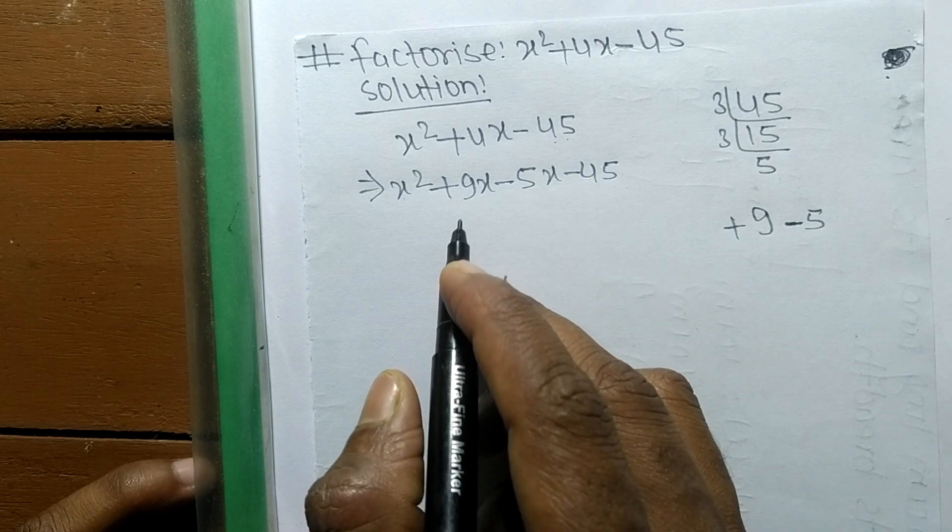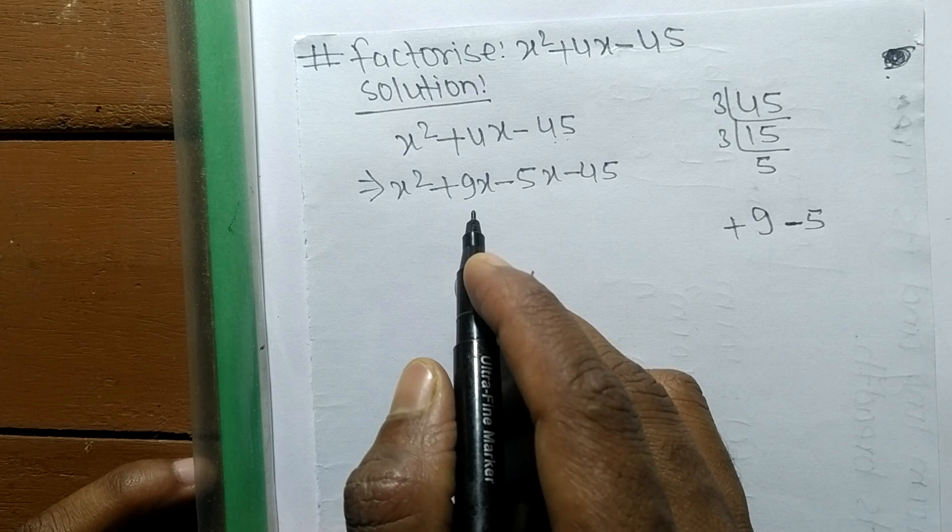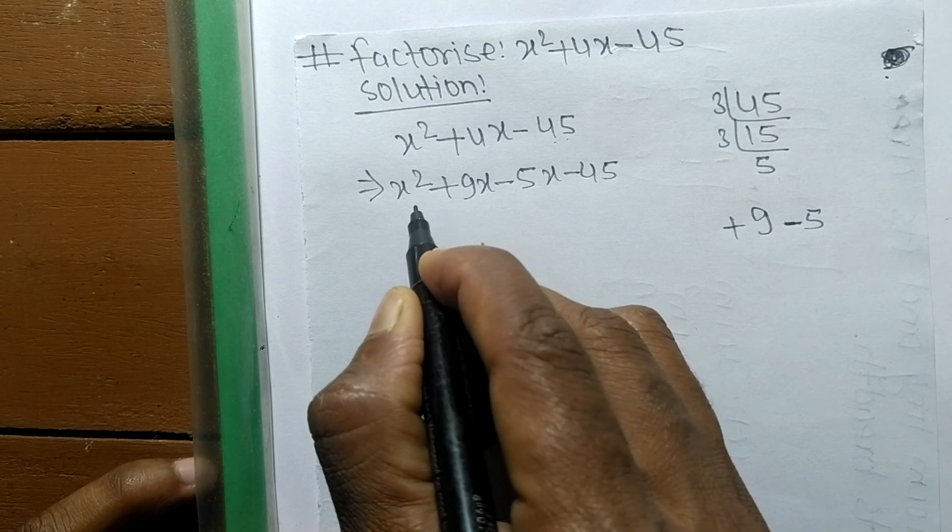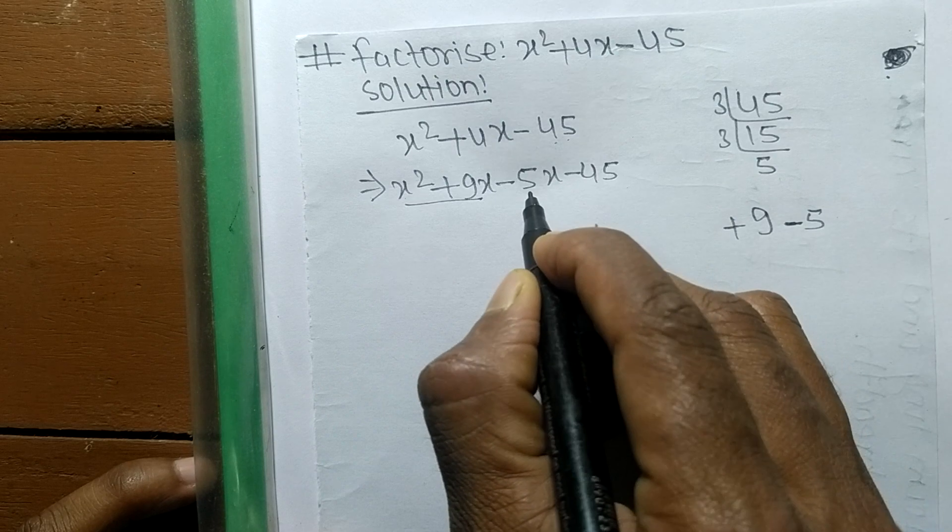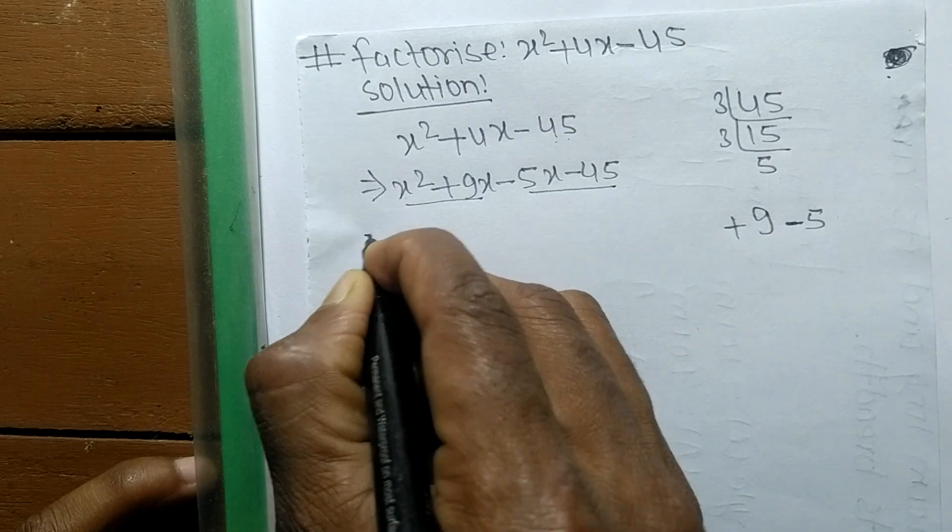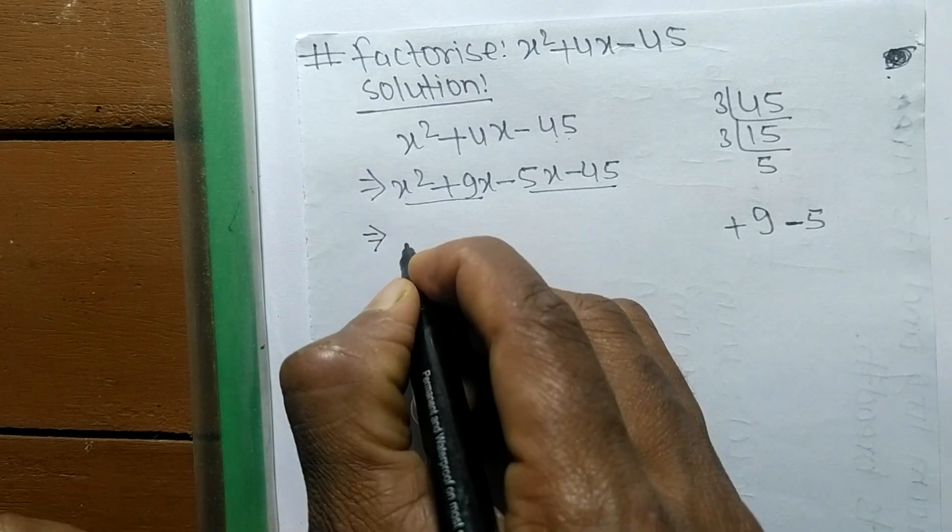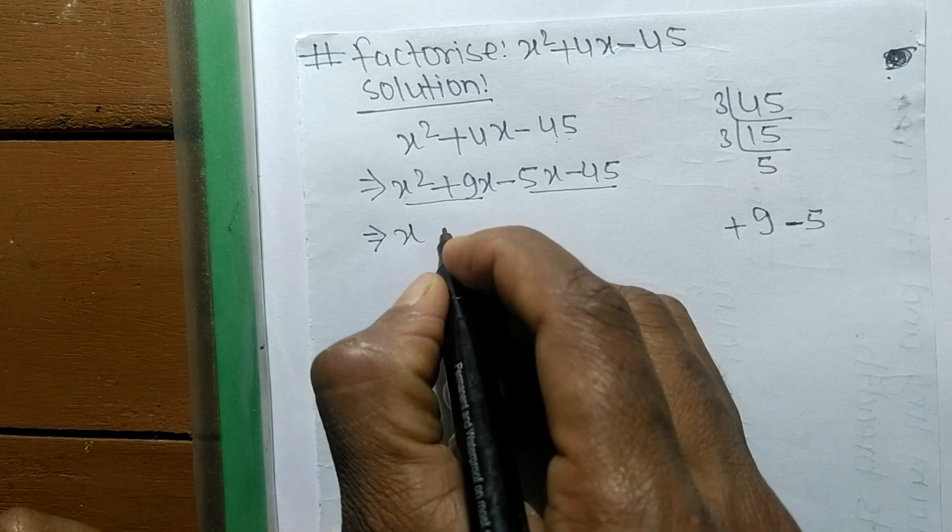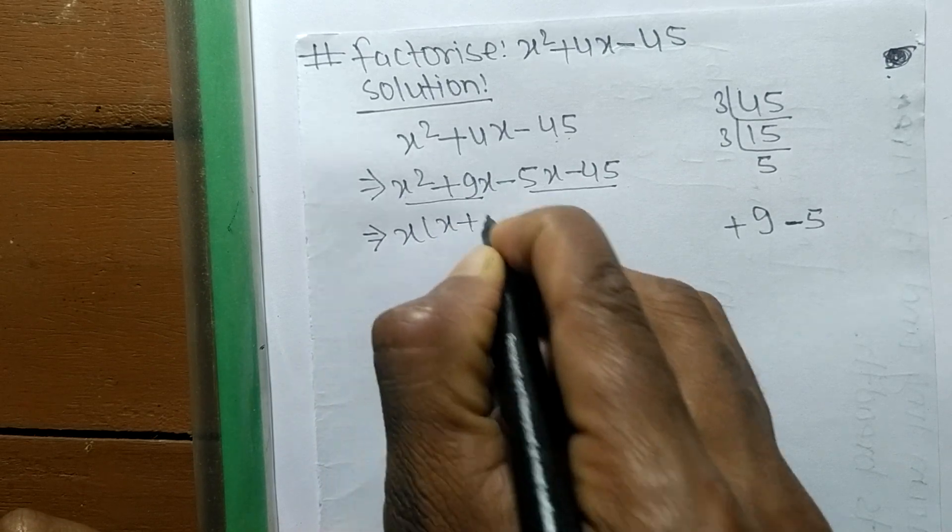Now we have to divide these expressions into two pairs. These both are first pair, these both are second pair. In the first pair, the common part is x, and the remaining is x + 9.